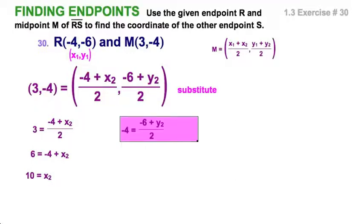Over here, negative 4 equals, look at the expression over here, negative 6 plus y2 over 2. I'm going to, from here to here, I double both sides of the equation, just a little arithmetic, and solve y2 as negative 2.